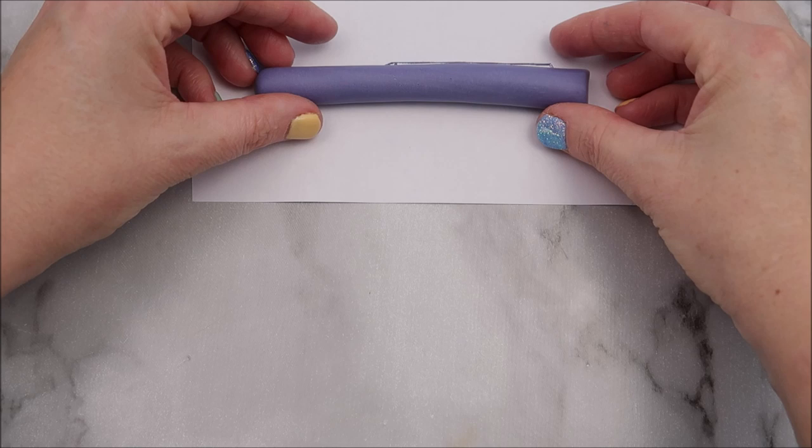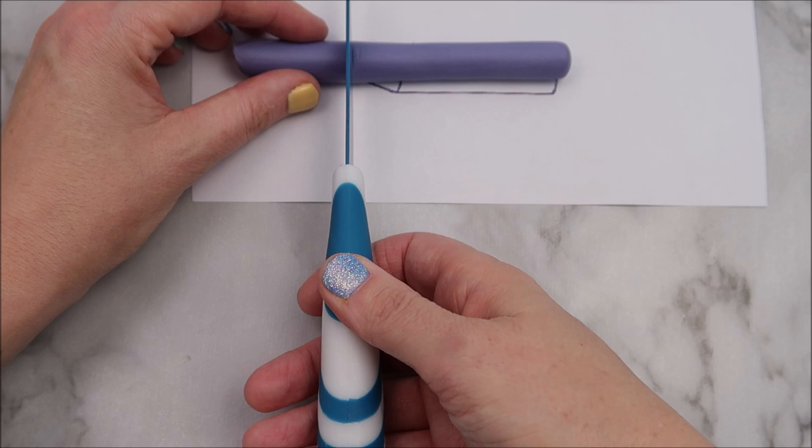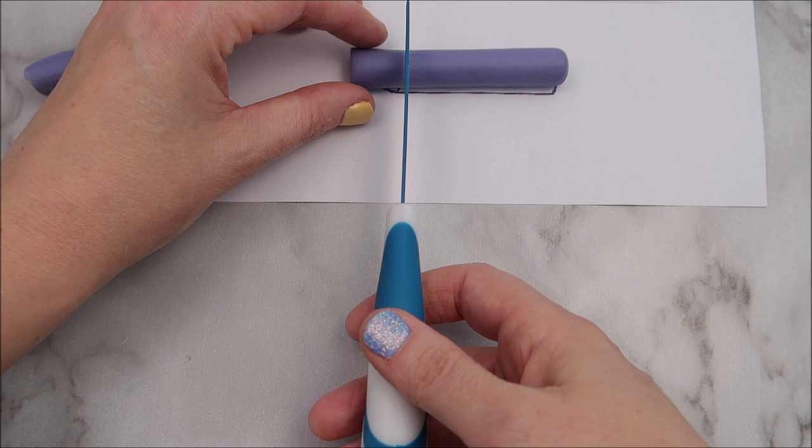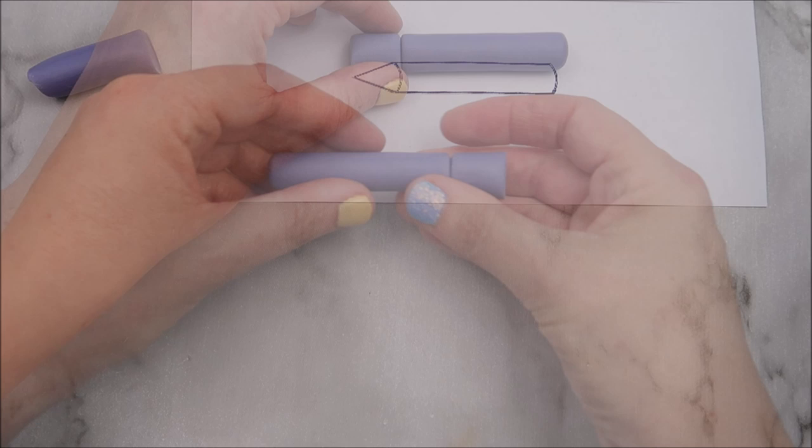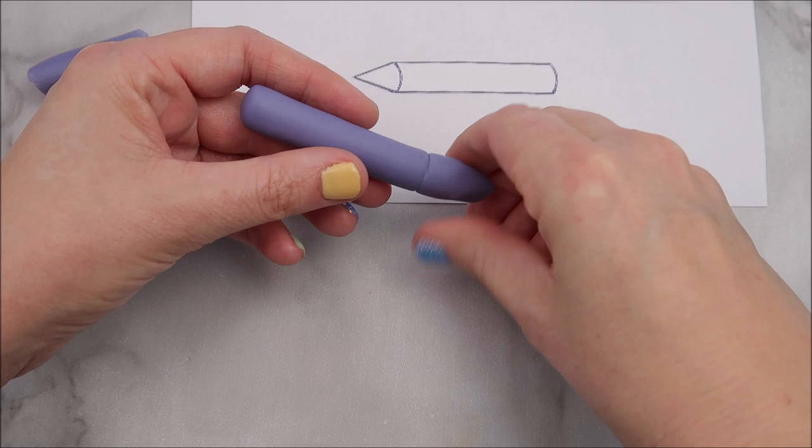And of course we need crayons for around the outside. So again I'm using the template as a guide and I'm cutting the crayon to shape. Just looking to see where the tip of the crayon is and I'm going to create an indentation here with a knife. Then I'm going to use my fingers to create a tip at the top of the crayon to make it into a pointed shape.